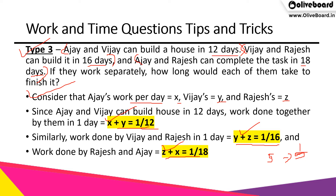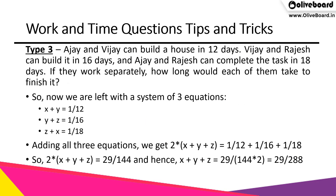Now that we have three equations, we add all three together. Each variable appears twice: X appears in equations 1 and 3, Y in equations 1 and 2, and Z in equations 2 and 3. So the left-hand side becomes 2(X + Y + Z). On the right-hand side we have 1/12 + 1/16 + 1/18.